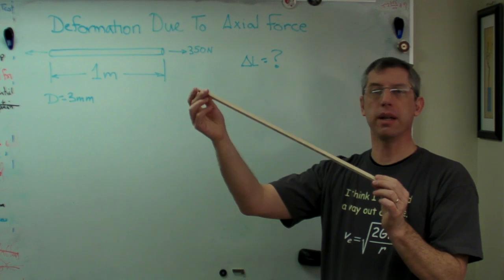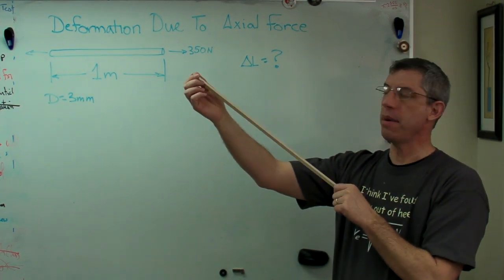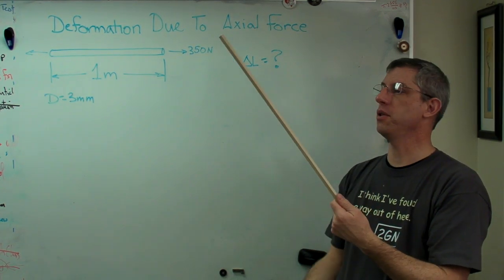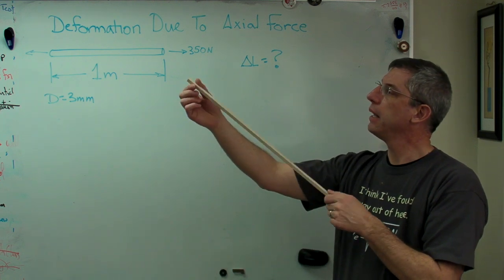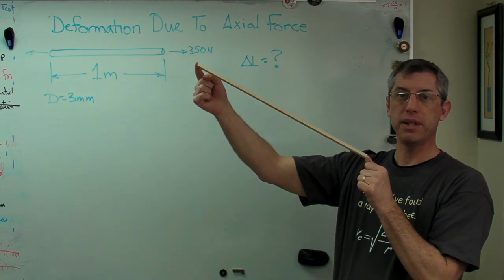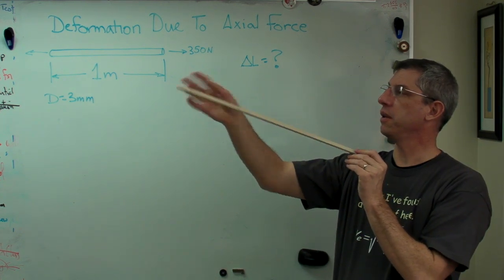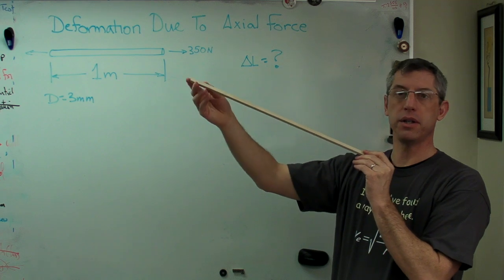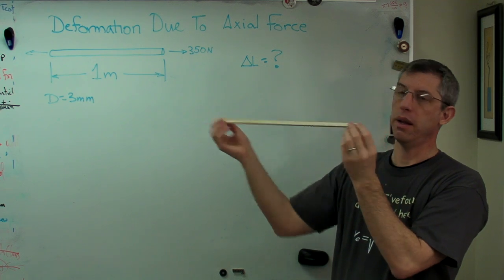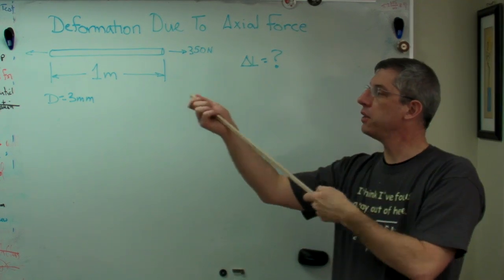I have a guitar making lab here, and this came out of my guitar lab. I made this out of a piece of wood that didn't go into a guitar. It's basically axial — the length dimension is much, much longer than either of the cross-sectional dimensions.